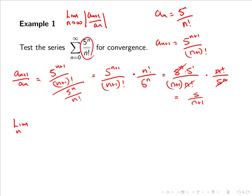So now the limit as n goes to infinity of the absolute value of a_{n+1} over a_n equals the limit as n goes to infinity of the absolute value of 5 over n+1.